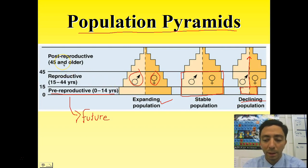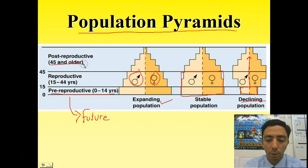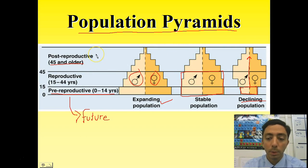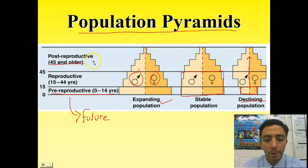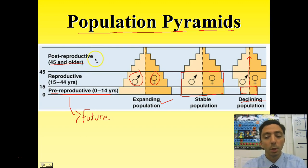Another good indication of the health or status of the country is the post-reproductive group — the older folks who can no longer work. A very large post-reproductive age group relative to the others usually indicates upcoming social and economic issues, since you need people to support these older folks — people to fund Medicare and public services. This puts a strain on the economy, though these are also typically your most skilled workers who will eventually want to retire.